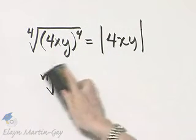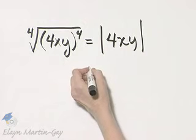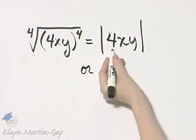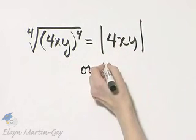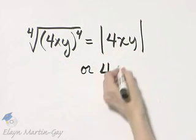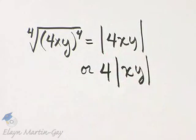So we have the absolute value of 4xy. That is fine, or it is true that the absolute value of a product is the product of the absolute values. So I can write this as the absolute value of 4 times the absolute value of xy. And of course, the absolute value of 4 is 4. So that would be 4 absolute value of the product xy.